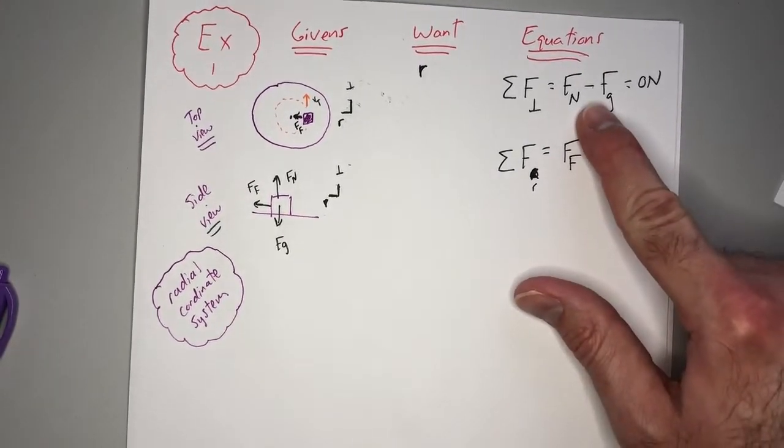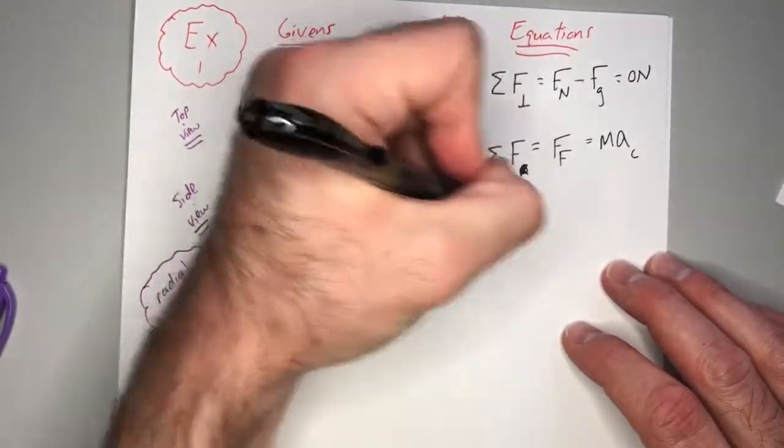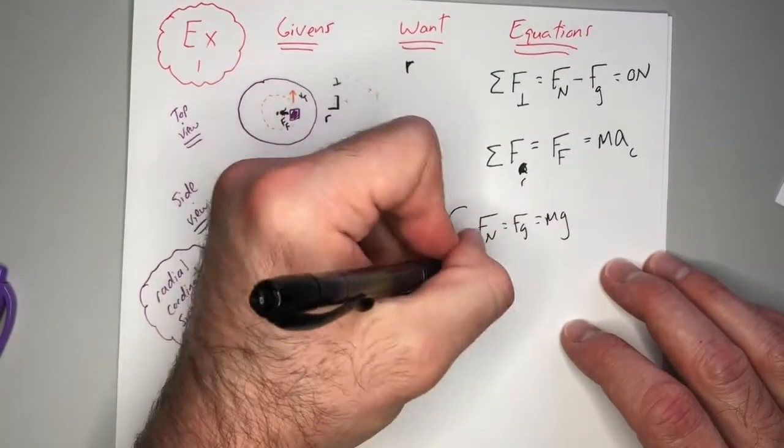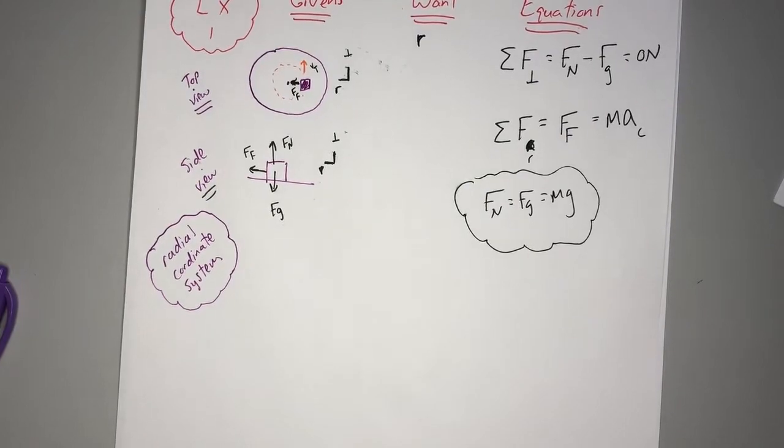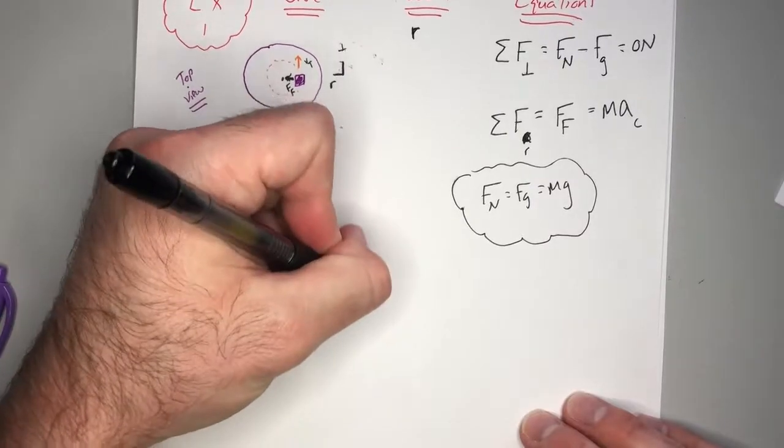And now, this one's not super helpful. Fn minus Fg equals zero. That just tells you Fn equals Fg. Remember, Fg equals Mg. So that is something we've known for a long time. On a flat surface, the normal force equals the gravity. There's no other forces acting in the up and down direction. Let's focus on this for a second.